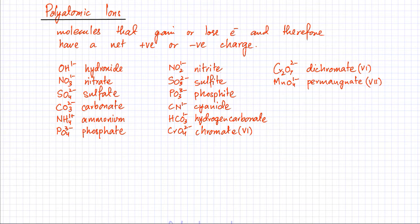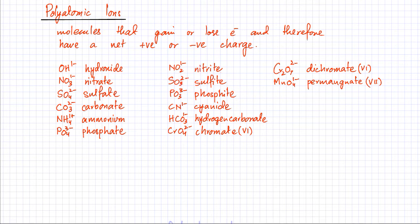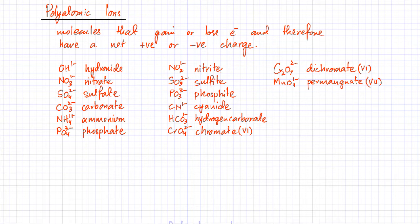Then you have these less common ions. Nitrite is NO₂ 1− — remember the difference between nitrate (NO₃ 1−) and nitrite (NO₂ 1−). Similarly, sulfite is SO₃ 2−, compared to sulfate which is SO₄ 2−. Phosphite is PO₃ 3−, compared to phosphate which is PO₄ 3−. Then you have cyanide: CN 1−. Hydrogen carbonate: HCO₃ 1−. Chromate: CrO₄ with a net negative charge of minus two. And dichromate: Cr₂O₇ with a net negative charge of minus two. Permanganate is MnO₄ 1−.